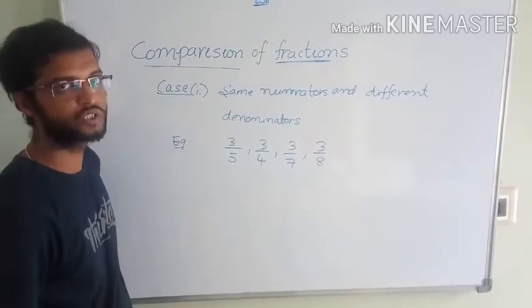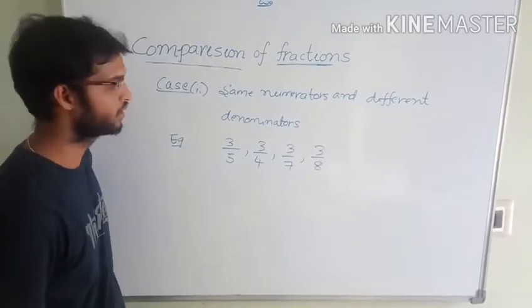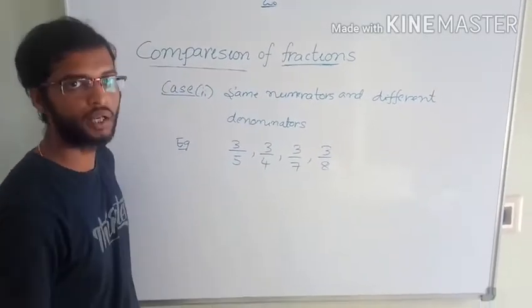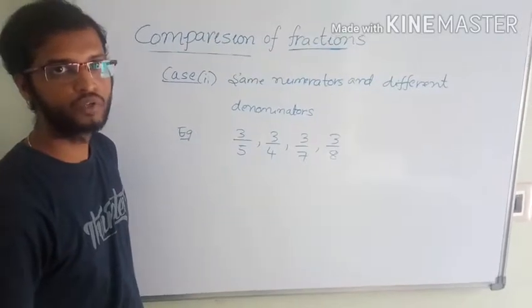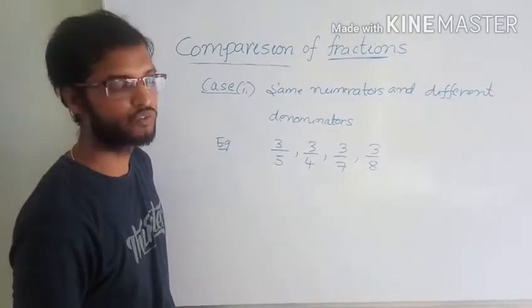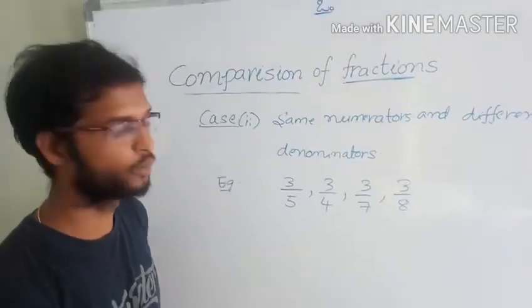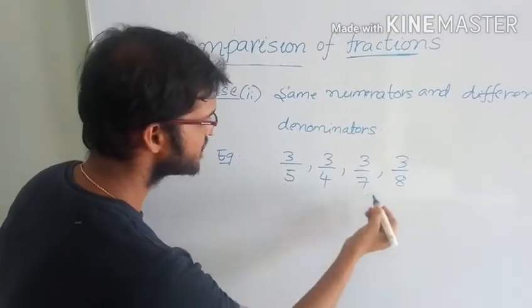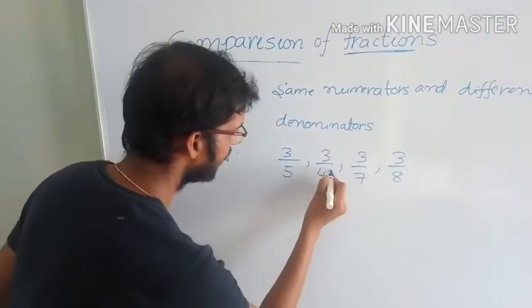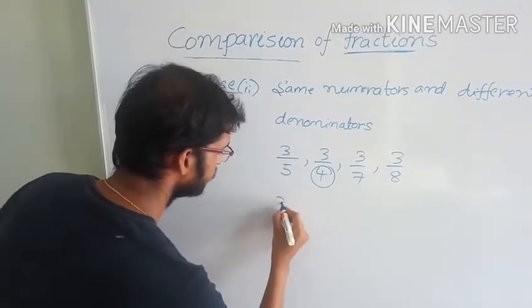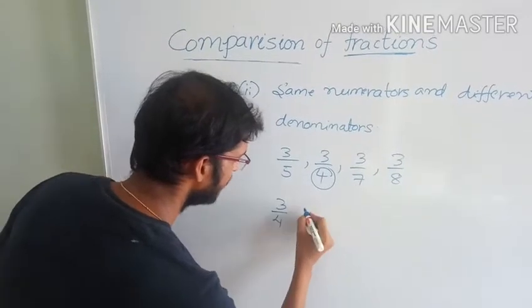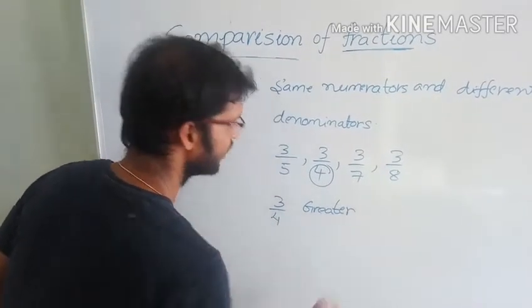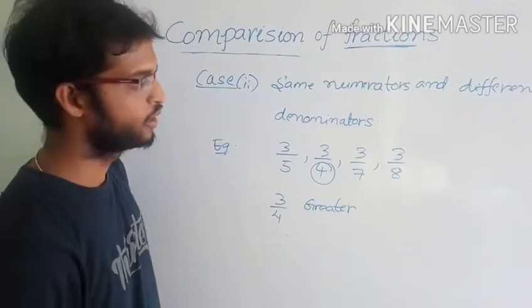How to find which fraction is greater? In Case 2, observe only the denominators. If the denominator has a lesser value, that fraction is greater. Among denominators 5, 4, 7, 8 — 4 is the smallest. So, 3 by 4 is the greatest fraction.